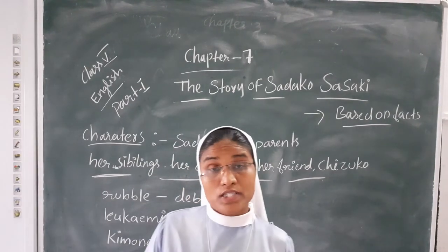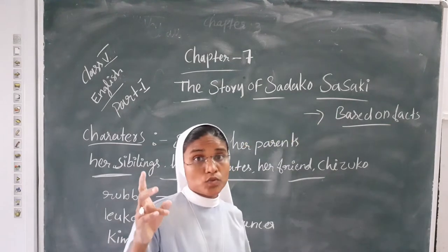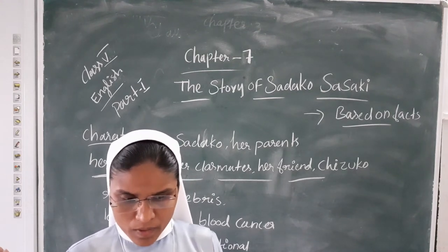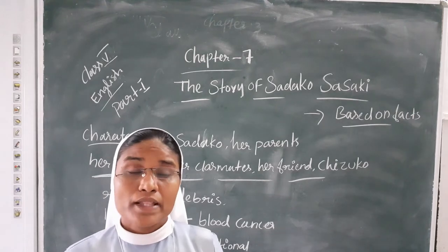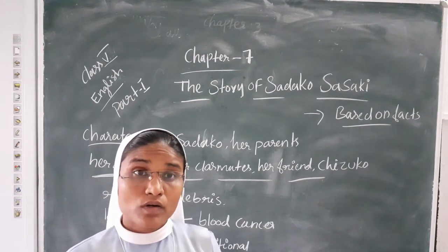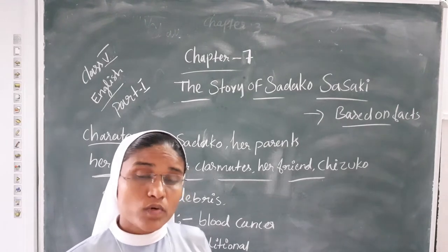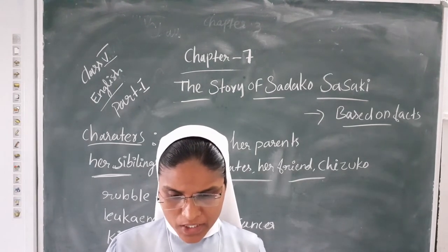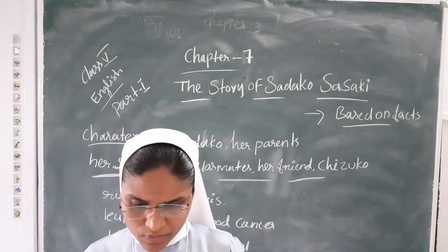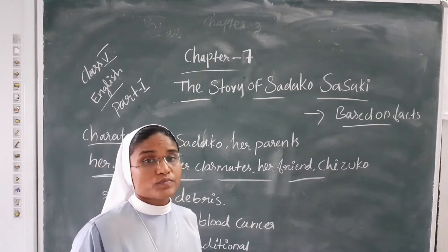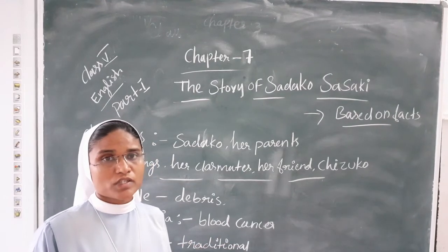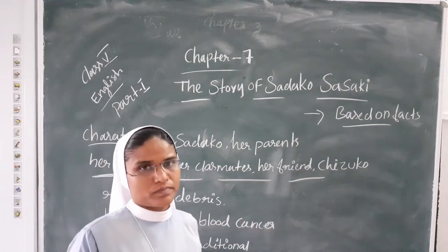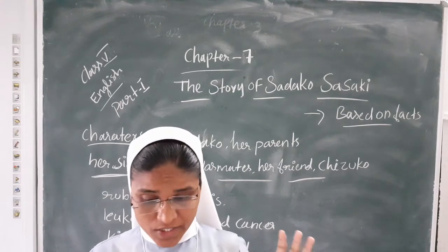Now we go into the story. Sadako is a two-year-old girl. When the atomic bomb was dropped in Hiroshima during the war, the bomb broke over that area. Sadako's family — her parents — managed to survive the terrible bombing. Many were injured and many people suffered from the war, but Sadako's family survived.